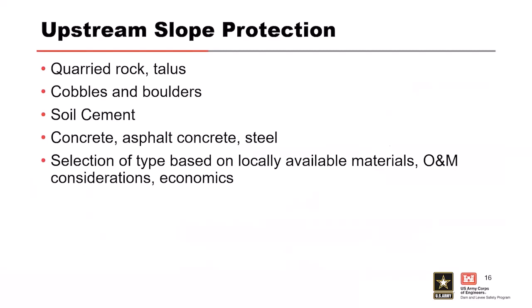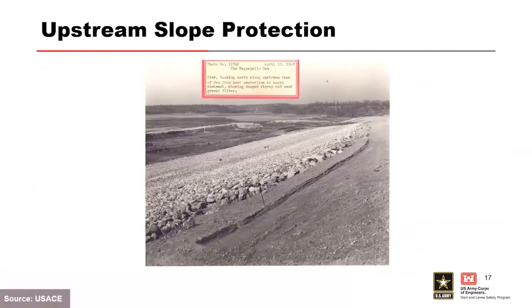Upstream slope protection depends on locally available material and O&M considerations. With soil cement, steel face, or concrete, you have joints on the upstream slope that could cause long-term maintenance issues. Here's a typical riprap slope — an older photo from Wapapello Dam, a Corps dam during placement. It had a fine filter underneath the riprap, though it's hard to see in the picture.